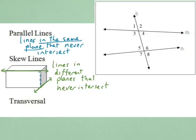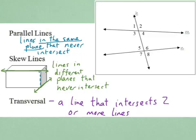We have one last term to define — that's transversal. A transversal is a line that intersects two or more lines. So what is the transversal in the picture here? The line that intersects two or more lines is line H. That's the transversal.